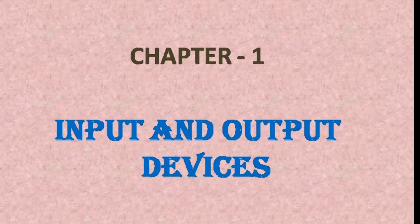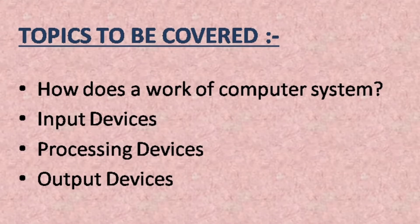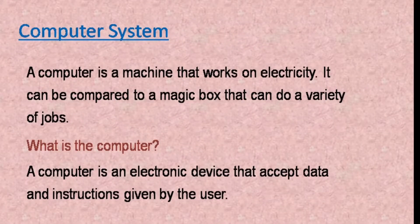Chapter 1 is about input and output devices. The topics to be covered in this chapter are how a computer system works, input devices, output devices, and processing devices. As we have already learned in earlier classes, a computer is used in various places to do different jobs. Now I will move to the first topic: how does the computer system work, and what is a computer system?